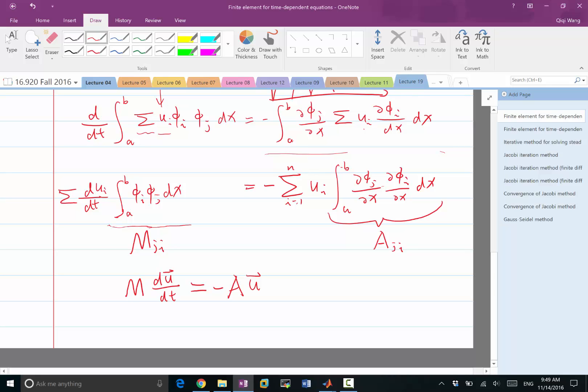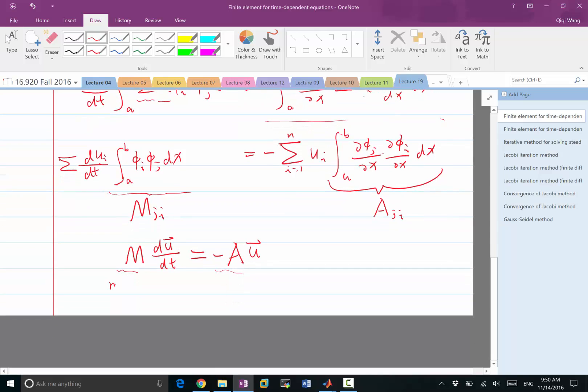Interestingly, when we discretize this equation, we don't get d vector u/dt equal to a matrix times u. We get another matrix, we call the mass matrix, in finite element, times the time derivative of u, equal to, now this is something we call the stiffness matrix, minus A, times the vector u. So, in finite element jargon, this is mass matrix. This is stiffness. The reason for that is,